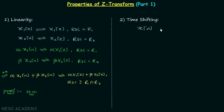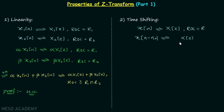To understand the time shifting property, let's say there is a discrete time signal x[n] with Z-transform X(z) and region of convergence R. If we perform time shifting by n0, giving a new signal x[n−n0], then the new Z-transform equals the old Z-transform X(z) multiplied by z^(−n0), and the region of convergence remains the same except for possible addition or deletion of the origin or infinity.